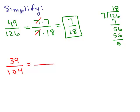39 is 3 times 13, and now looking at this other number, if anything cancels it will have to be a 3 or a 13. Does 3 go into 104? No, because if you add the digits you get 5. So probably 13 goes into it.